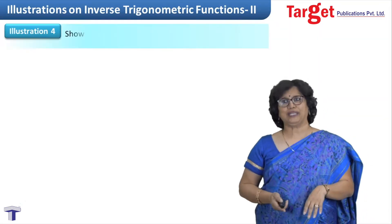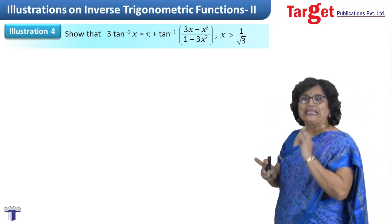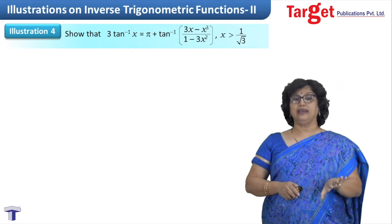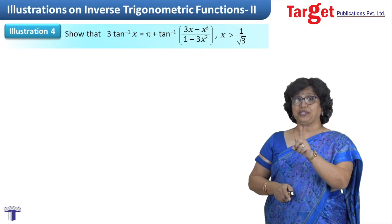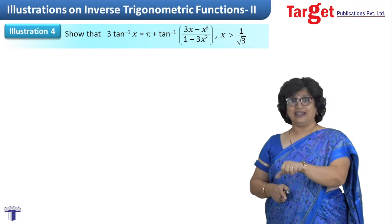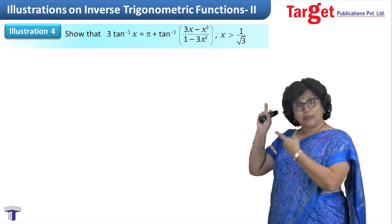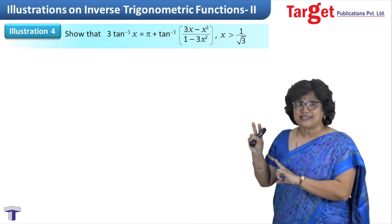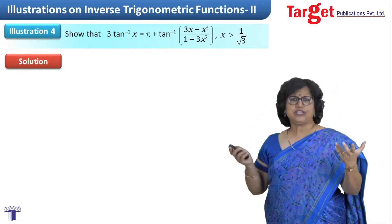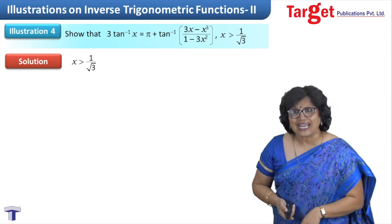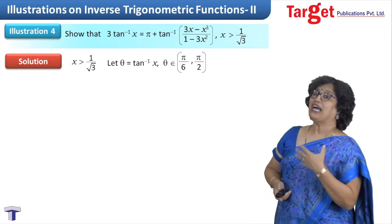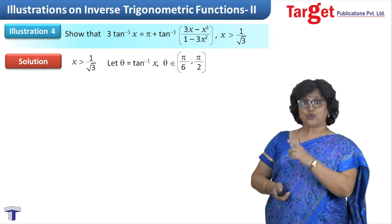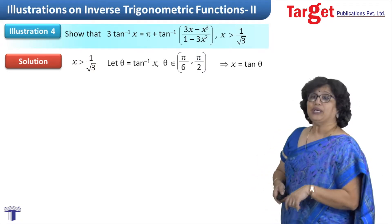Moving to the next one: we have to show 3tan⁻¹x = π + tan⁻¹((3x - x³)/(1 - 3x²)), with condition x > 1/√3. The previous condition is different from here, so there is a correction on the right hand side — we have π plus. My procedure is similar: I write x > 1/√3, name θ = tan⁻¹x, put condition on θ as θ ∈ (π/6, π/2), and then take tan on both sides giving x = tanθ.